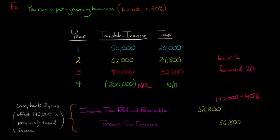You're going to debit income tax refund receivable. You're going to get a refund from the IRS of $56,800. That's that $142,000 times 40%. You're going to credit income tax expense to make this balance. Remember, expense is increased with a debit, decreased with a credit. So you're reducing your income tax expense that period by $56,800.